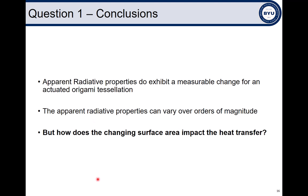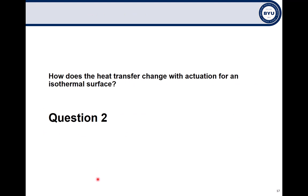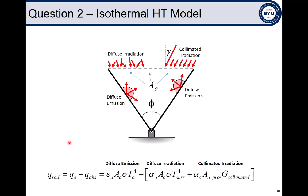But the radiative properties are only one part of the equation. How does the changing surface area impact the heat transfer? So that is the point of the next question. How does the heat transfer change with actuation for an isothermal surface? I began with an isothermal surface as an idealized step towards solving the heat transfer behavior of a real non-isothermal surface. To determine the influence of a changing surface area and changing radiative properties, I generated an energy balance of an isothermal tessellation, which is subject to diffuse irradiation, which means radiative energy is entering uniformly from all directions, and collimated irradiation, which is radiative energy that enters entirely from a single direction. This tessellation is emitting energy to the surroundings via thermal emission. From this energy balance shown at the bottom, it is clear that we need apparent radiative property data in order to proceed.